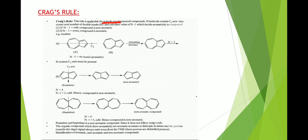In Craig's rule, we pass a C2 axis in such a way that the molecule is broken down into two equal parts. Then we calculate the value of n, which is the number of double bonds. Next, we calculate n minus 1. If the value of n minus 1 is odd, the compound is non-aromatic. If n minus 1 is even, the compound is aromatic.